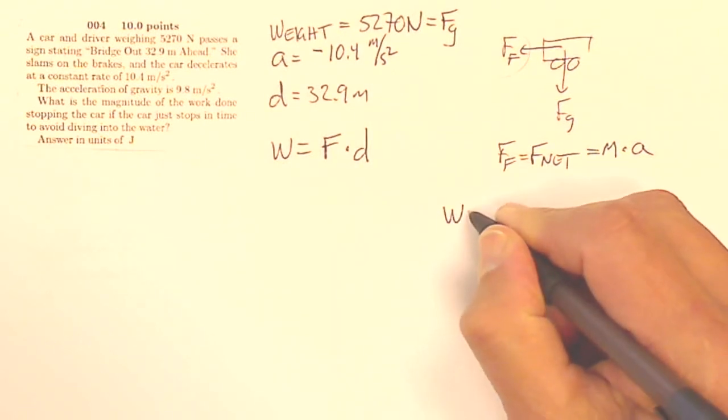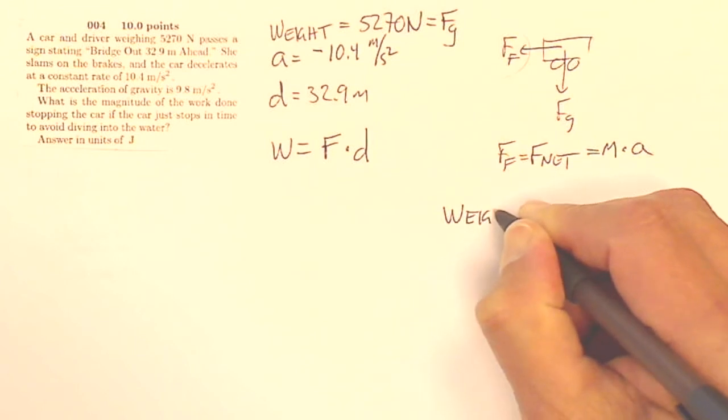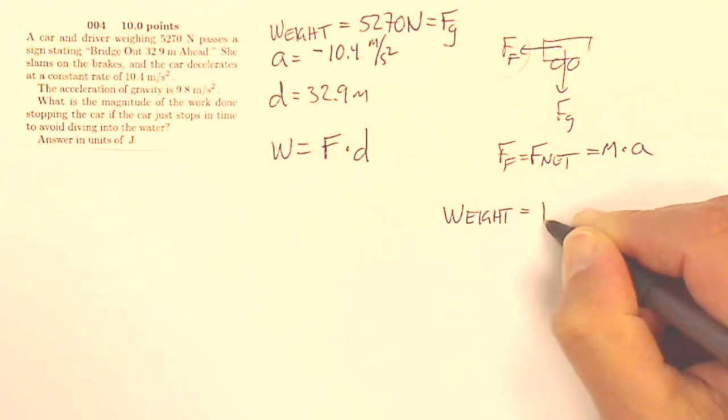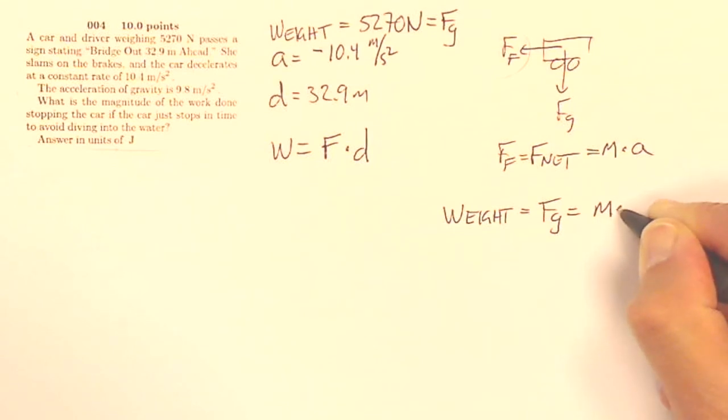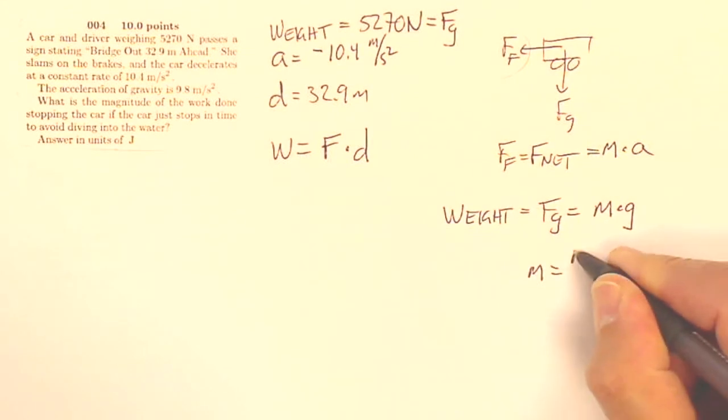Well, my weight is my force of gravity, which is going to be my mass times the acceleration of gravity. So if I know that and I want to get my mass, my mass is going to be the force of gravity divided by the acceleration of gravity.